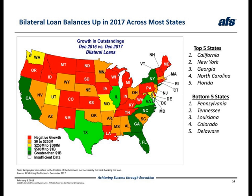On the next two slides, we adjust our lens and look not only at the top five and bottom five states, but the entire country. On slide 14, the colors on the map indicate the level of dollar balance growth experienced by a particular state, with dark green indicating the highest level of growth and red representing a decline. You can think of this view as a balanced growth heat map across the country. The map focuses on bilateral loans, and we can see that balances were up across more than half the states, with states such as California, New York, Georgia, North Carolina, and Florida experiencing significant growth in bilateral balances, as indicated by the green shading.